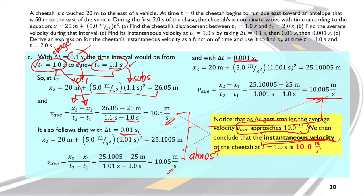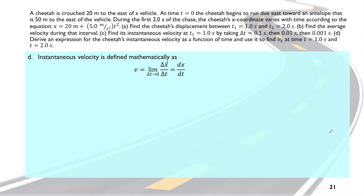Now letter (d), instantaneous velocity is actually defined in calculus as the limit of the change in x over the change in time as Δt approaches 0, or what we call the derivative.